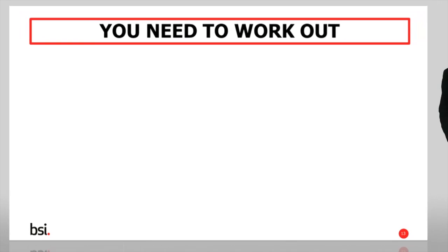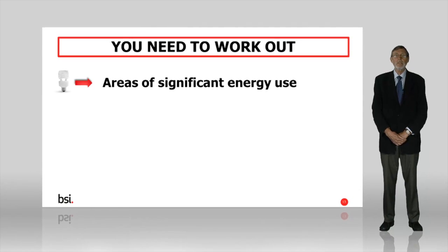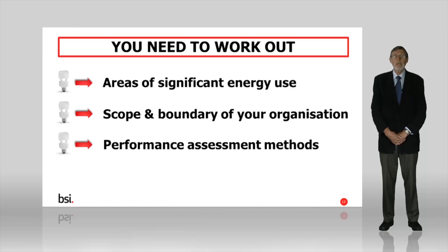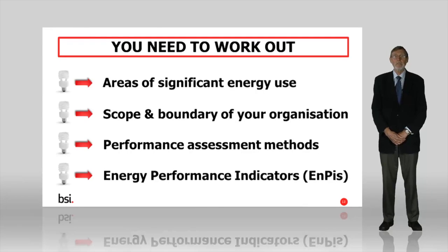Therefore, before you can start making improvements, you'll need to work out which are the areas of significant energy use, what the scope and boundary of your organisation will be, how you intend to assess the energy performance, and how you intend to measure energy performance improvement. Do note, if ENPIs are used to measure energy performance improvement, they should be relevant to the nature of the organisation in order to be an effective tool. When it comes to significant energy use, please bear in mind that this could be a variety of sources, including gas, electricity, biomass, or any other fuel, including secondary process heating. Assessing this may sound simple, but organisations often miss out key areas simply because data isn't available. Make sure you include an adequate period of data collection in order to get accurate results. You may also need to introduce metering in order to do so.